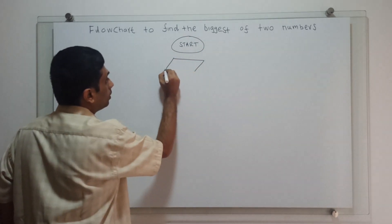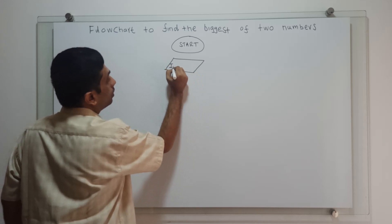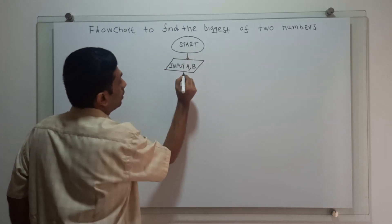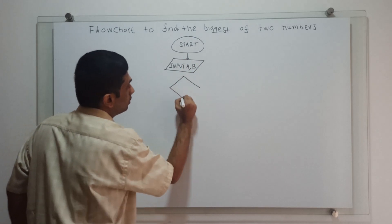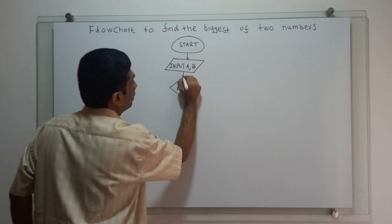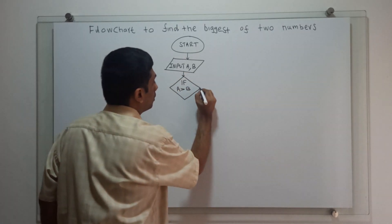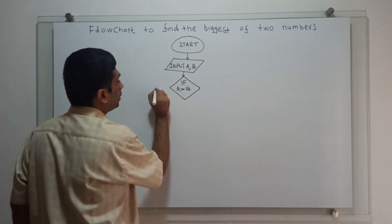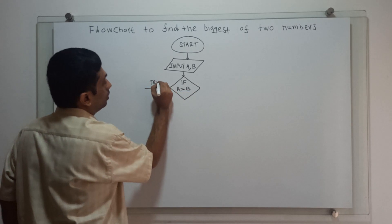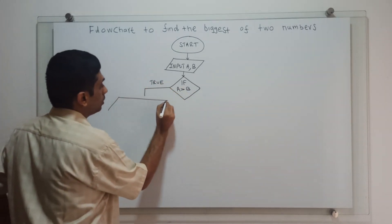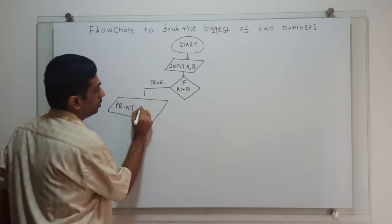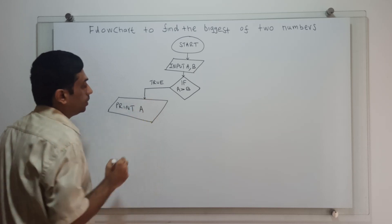I am obtaining two numbers, input A and B, and checking if A is greater than B. If A greater than B is true, I am printing — the biggest number is A.